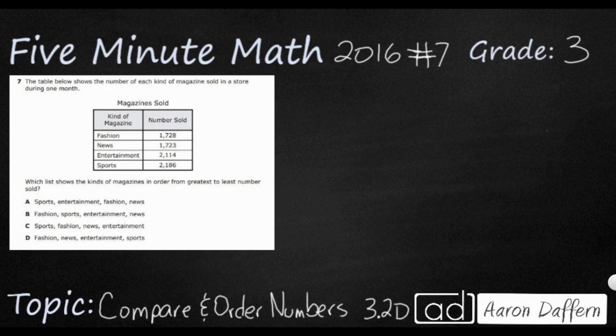Which list shows the magazines in order from greatest to least? This is the first thing we need to look at. Greatest to least—in case you're wondering, that's big to small. We're going big to small, greatest to least.